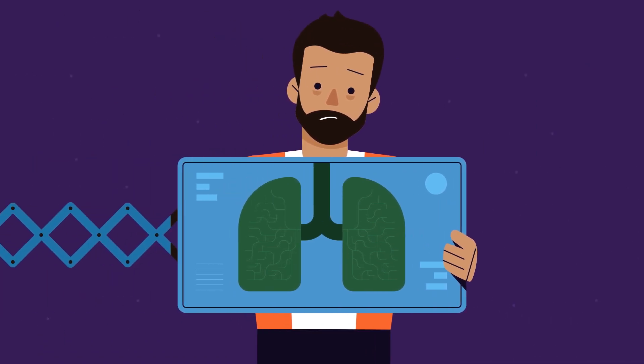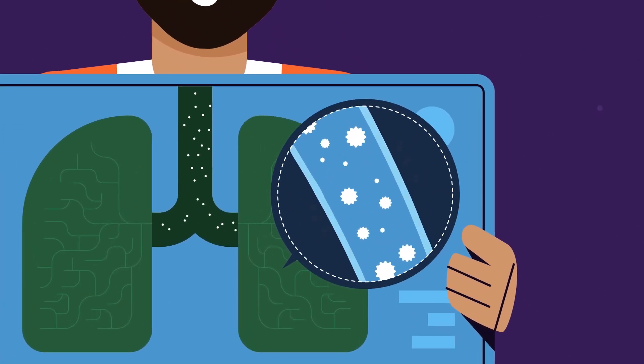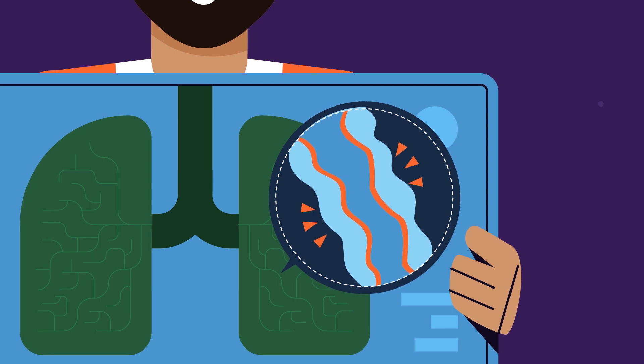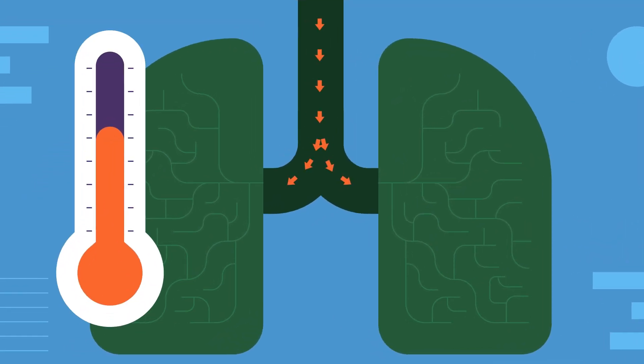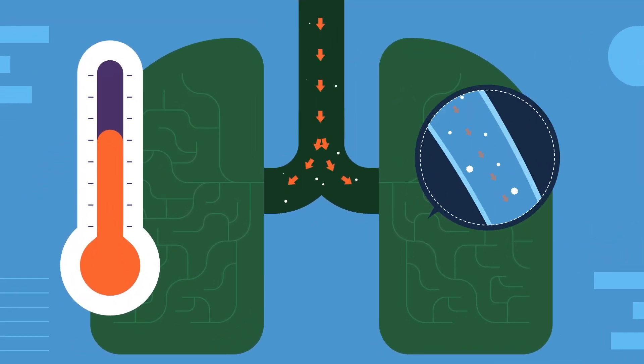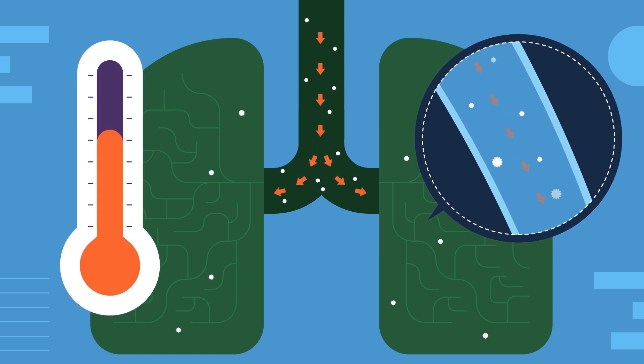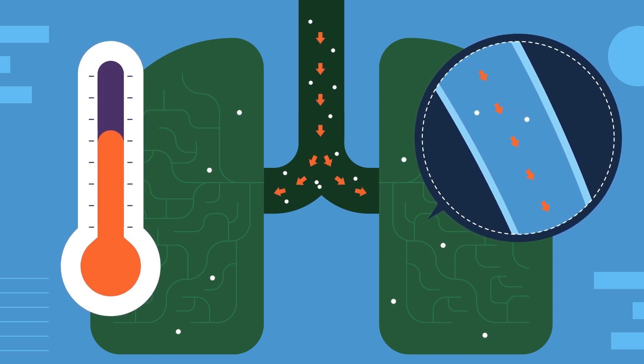People with asthma have airways that are more sensitive to triggers and prone to inflammation. When we breathe warm, humid air, our lungs find it easier to stay healthy and clear most of the substances we breathe in.